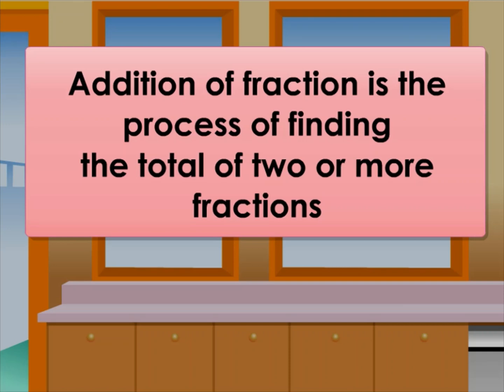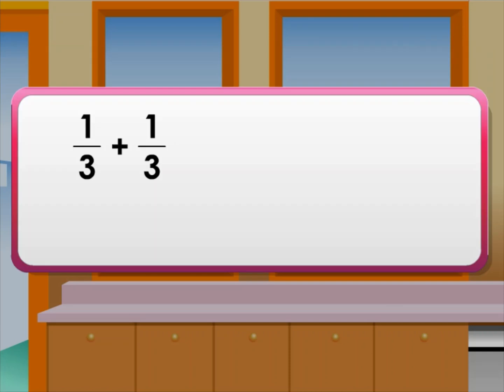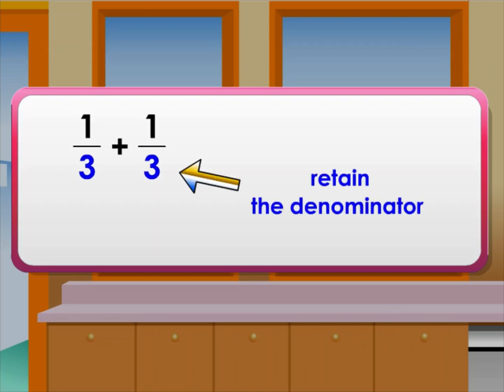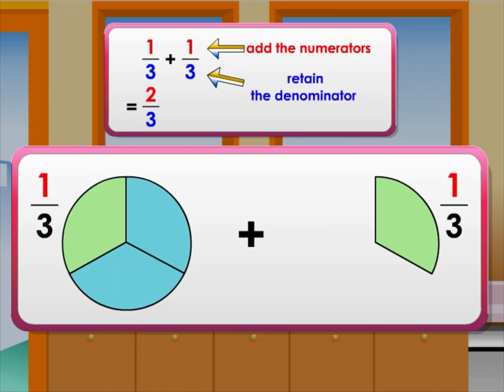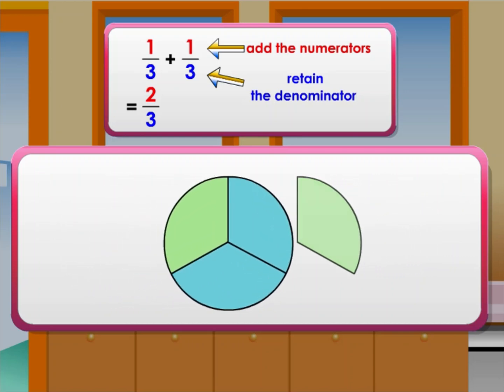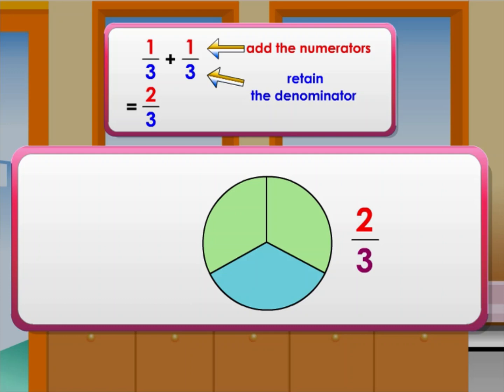Let's learn more about fractions. Addition of fractions is the process of finding the total of two or more fractions. To add two fractions with the same denominator, retain the denominator and add the numerators. For example, one over three plus one over three — we can also say it as one third added to one third. So the answer is two over three. They have the same denominators, so we just add the numerators. One added to one is two, so we get two as the numerator and three as the denominator.